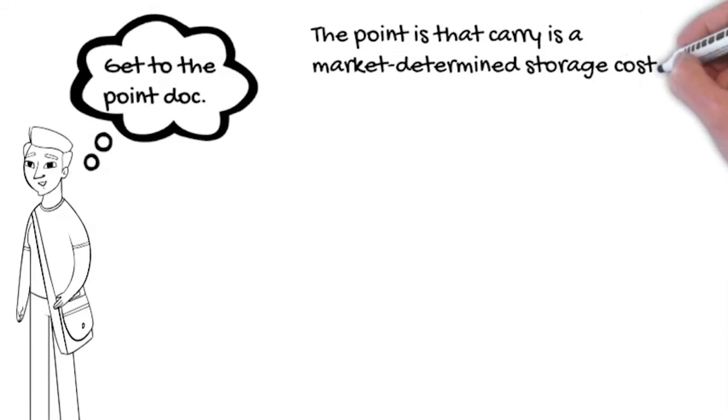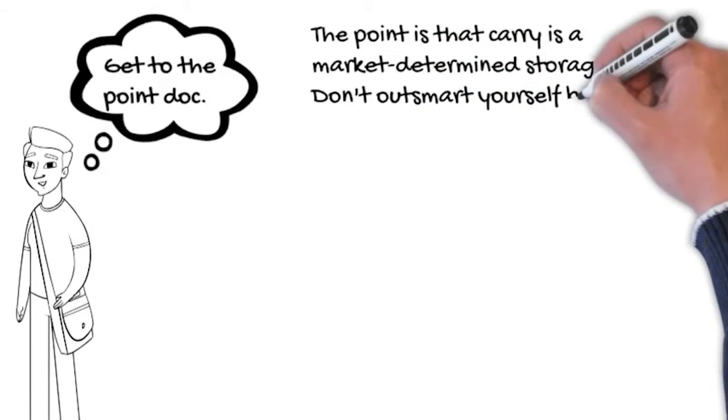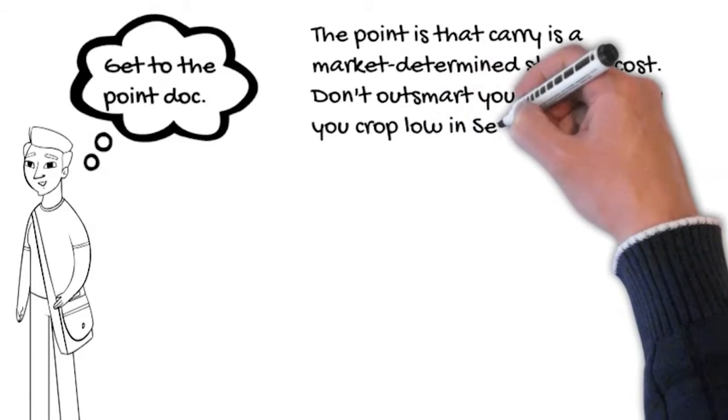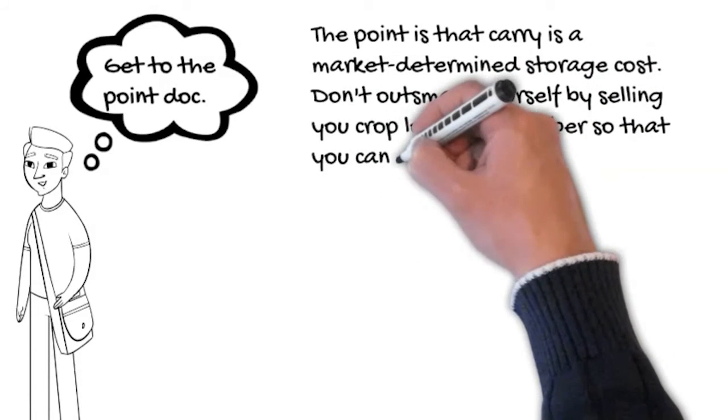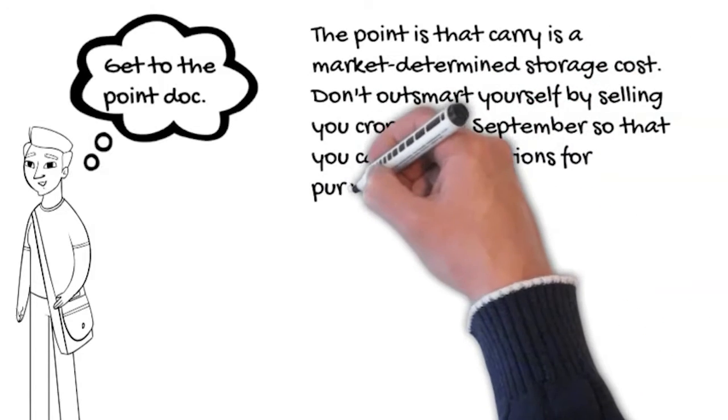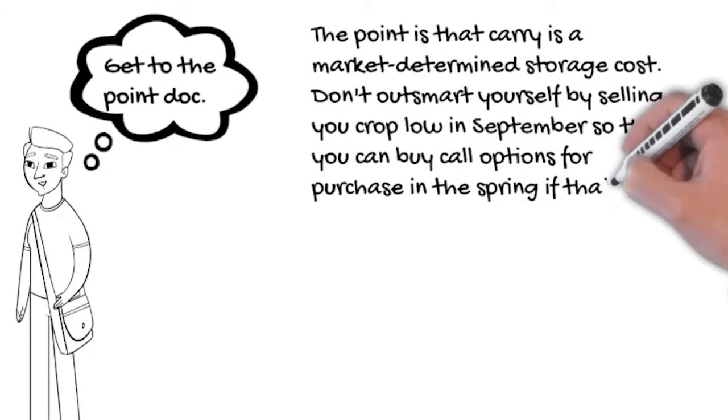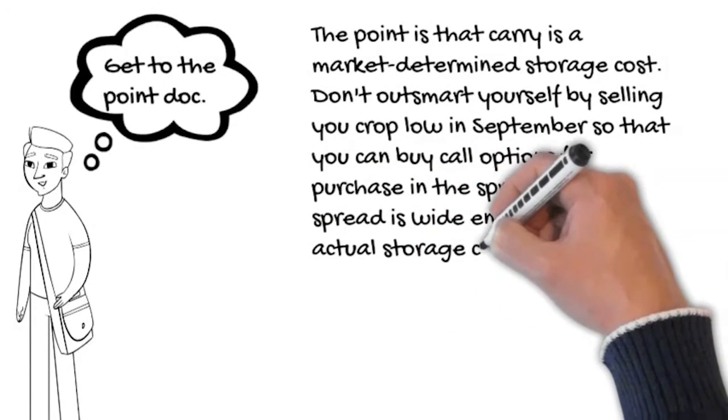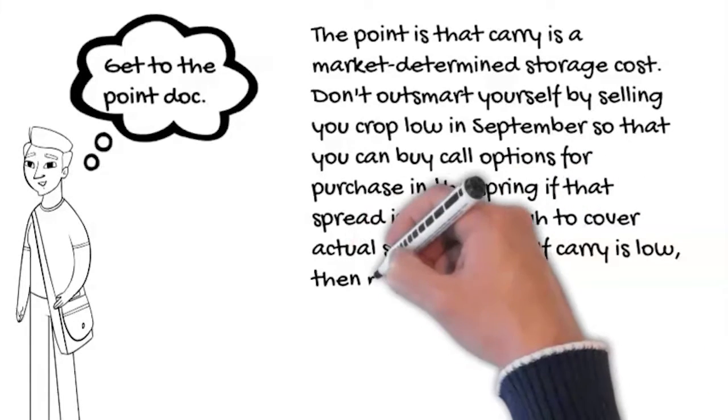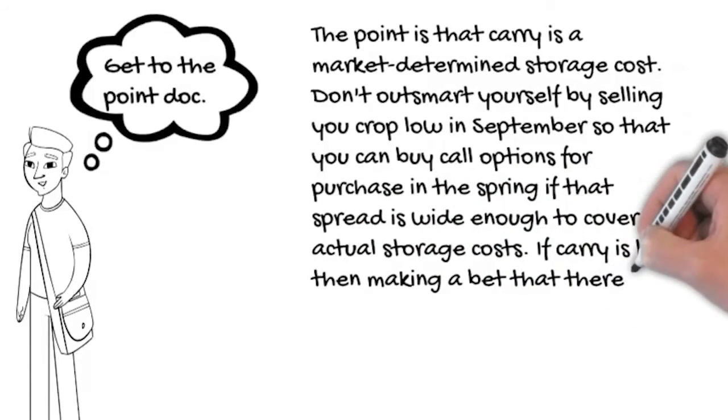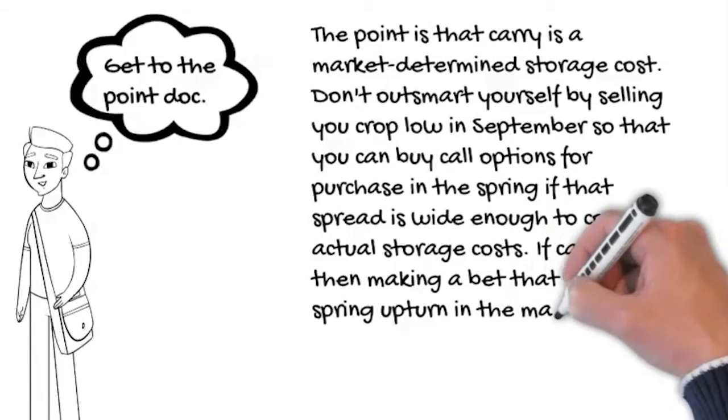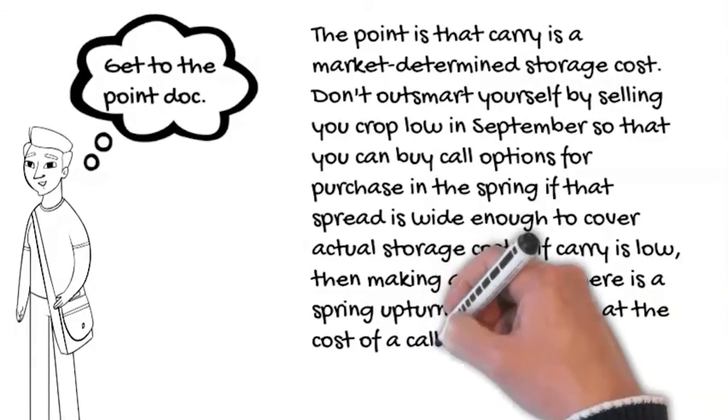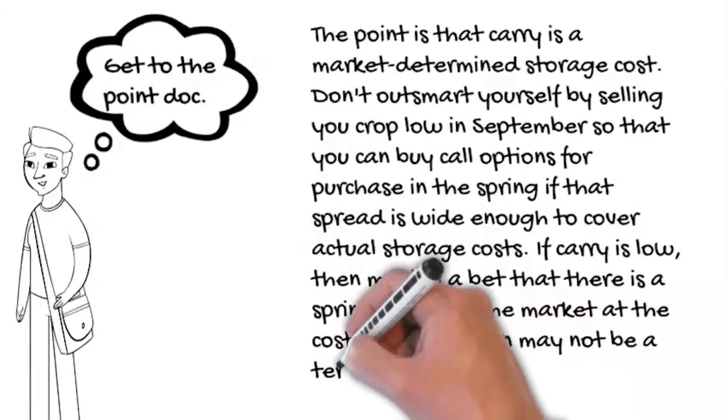Don't outsmart yourself by selling your crop at the low price in September so that you can buy call options for purchase in the spring if that spread is wide enough to cover the actual storage cost. If carry is low, then making a bet that there is a spring upturn in the market at the cost of a call option may not be a terrible idea. It may not be a good idea either.